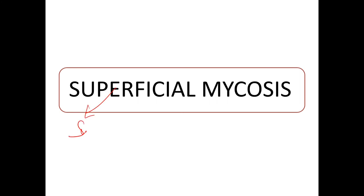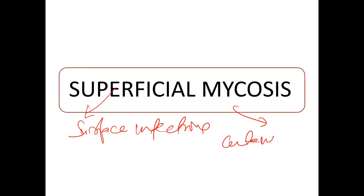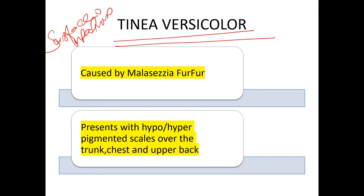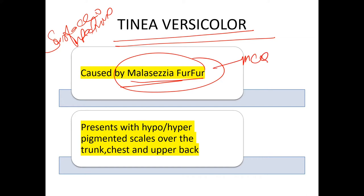We will be starting with superficial mycosis. Superficial mycosis includes surface infections and subcutaneous infections. The surface infections and cutaneous infections — let's see what the surface infections are. First is tinea versicolor. Tinea versicolor is caused by Malassezia furfur — remember this, it comes as an MCQ.